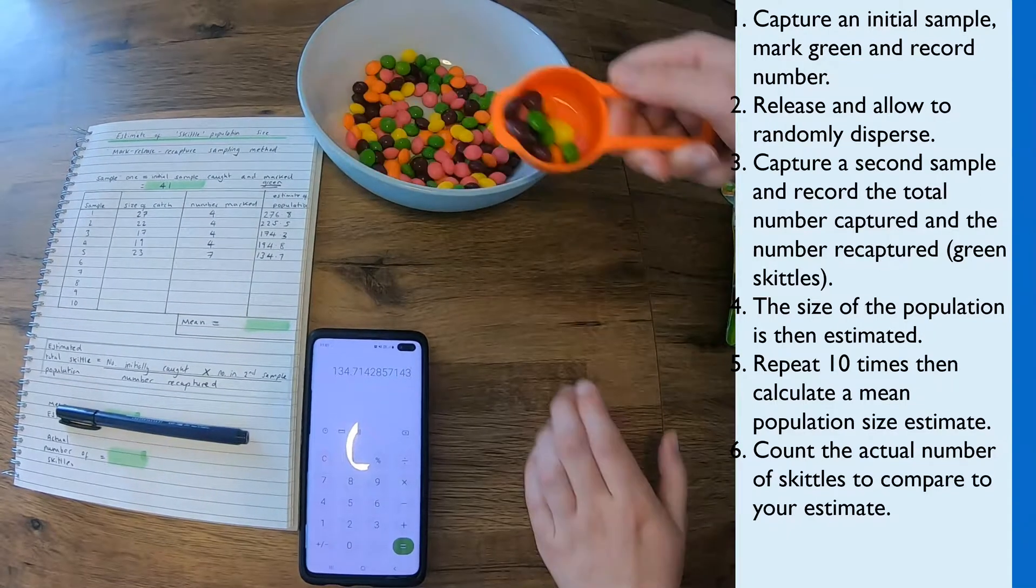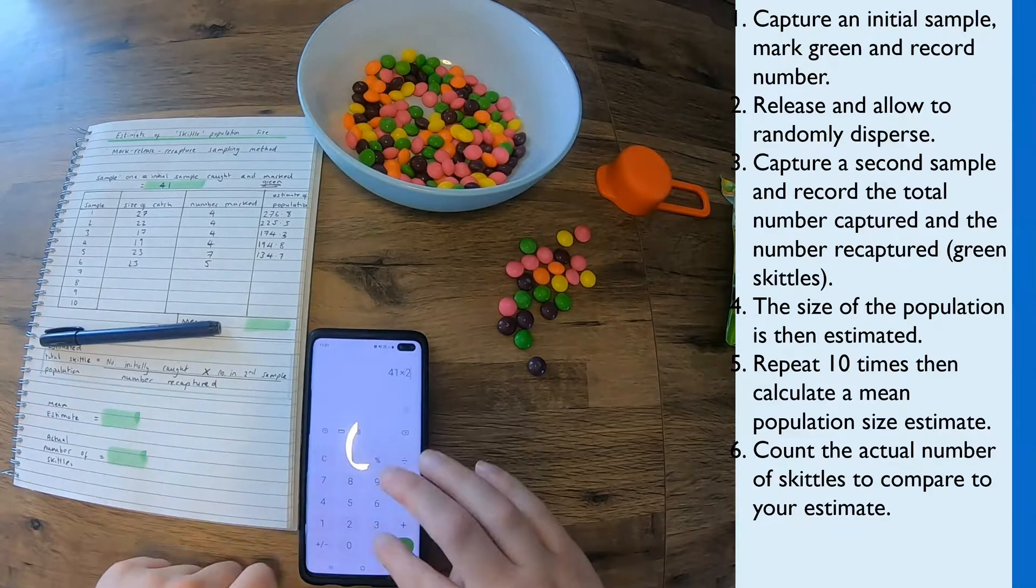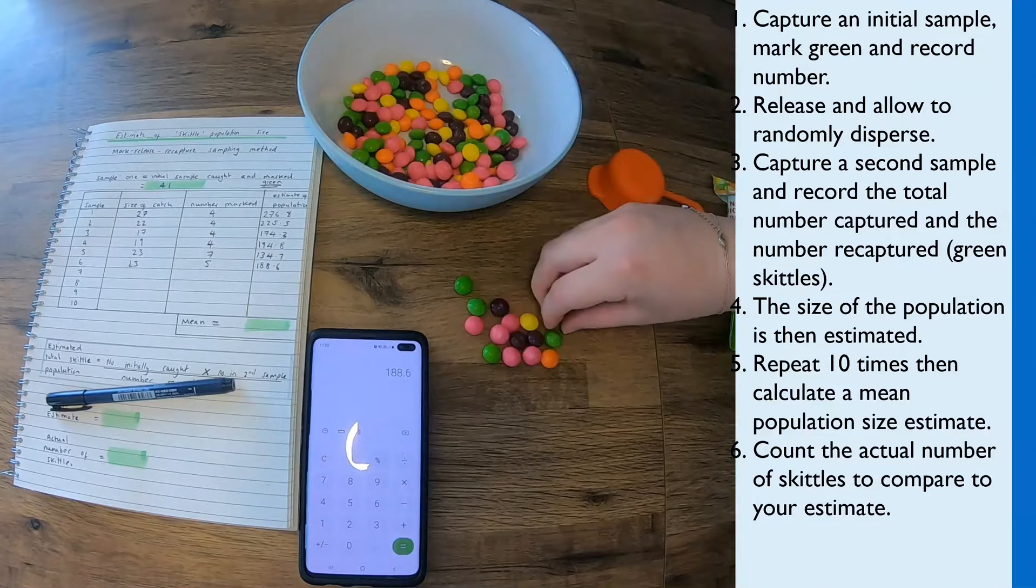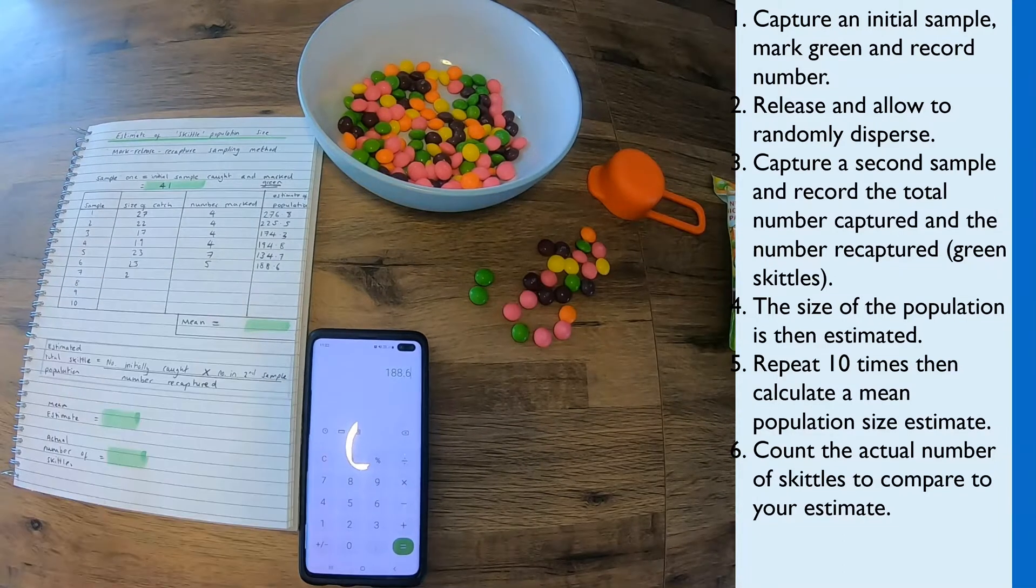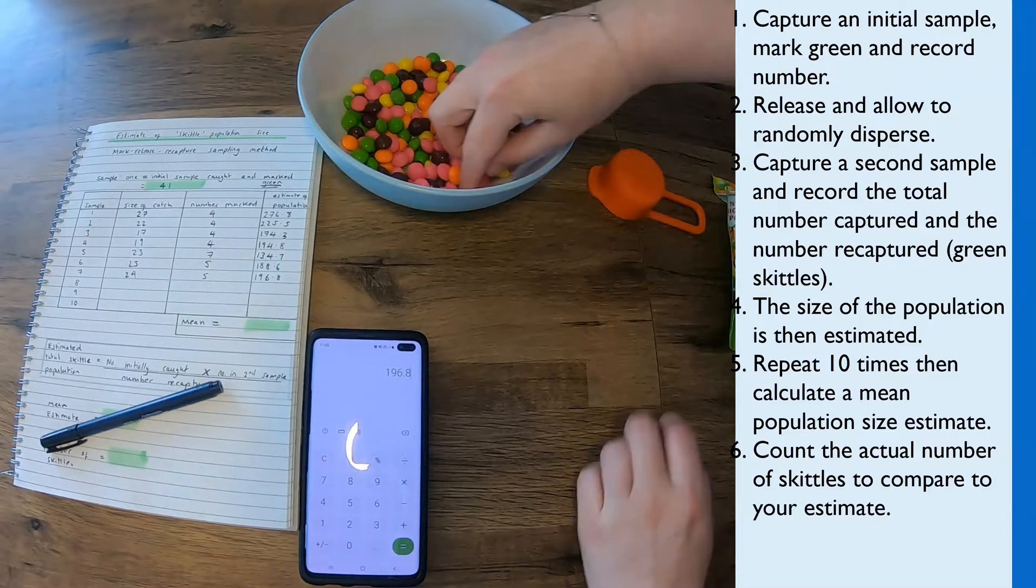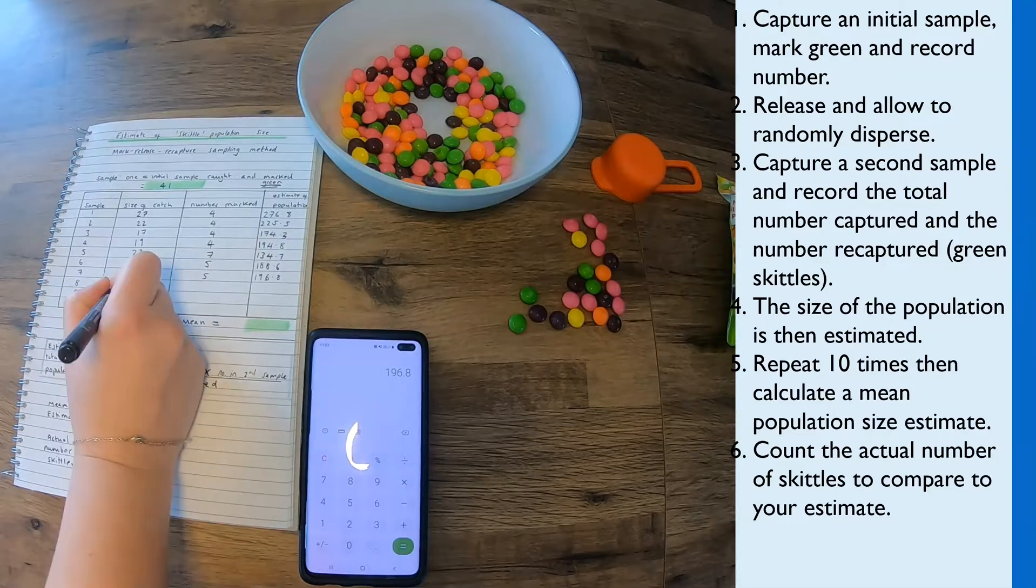But as you can actually see from my table, the final column is my estimate of the population for each sample. And at the moment I've taken five samples, and if you have a look, all of the estimates are quite different. So some of them are as high as 276, some of them are much much lower at 174, or there's even one, sample 5 was 134.